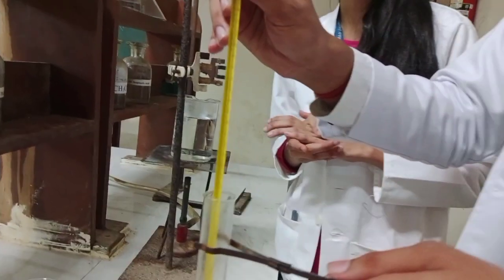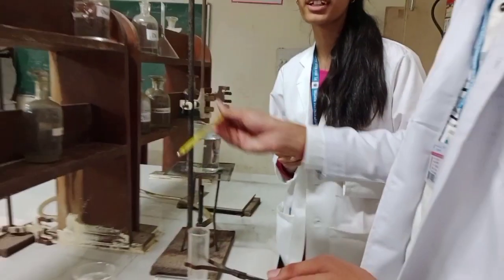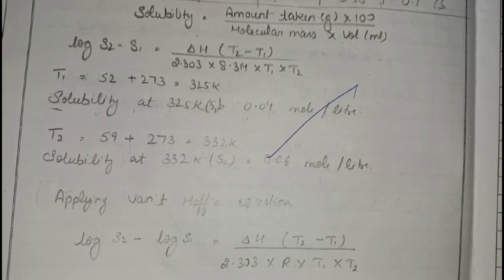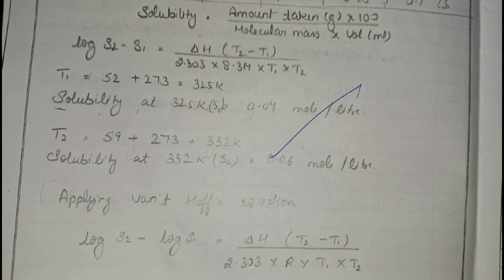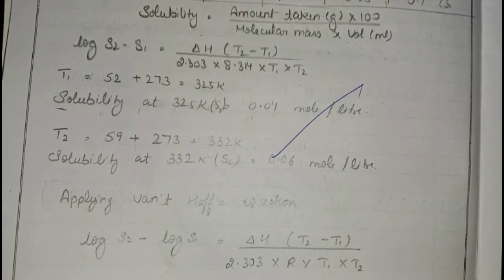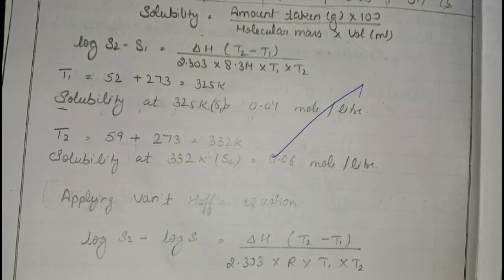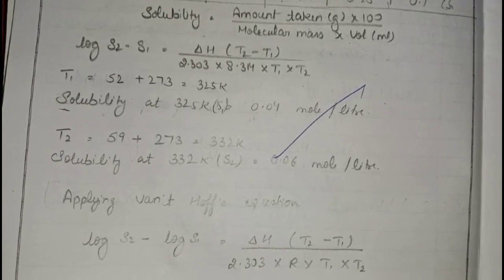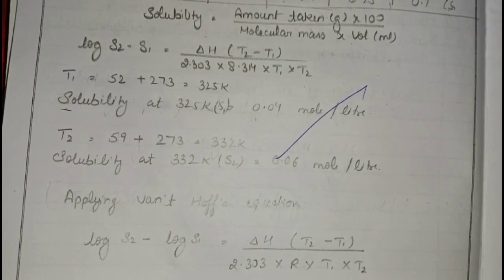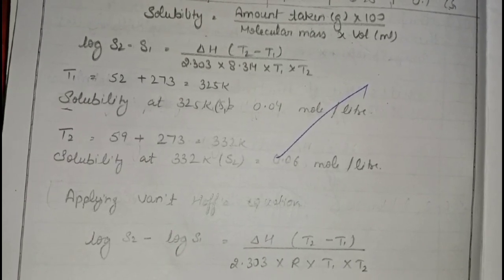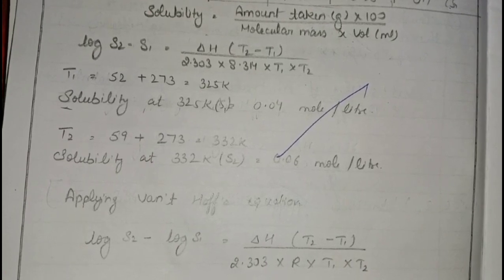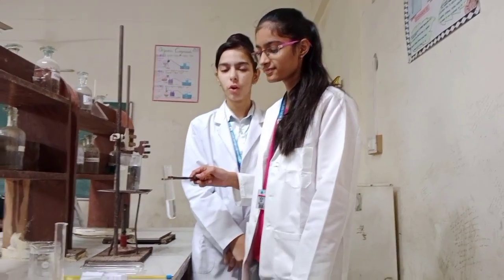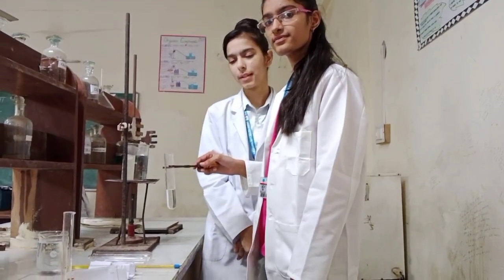Now we will calculate the solubility of benzoic acid. Using the formula of solubility for 0.1 g of benzoic acid, the solubility comes out to be 0.04 mol per litre at 325 Kelvin and 0.06 mol per litre at 332 Kelvin. Similarly, we will calculate the solubility for the other 3 samples of benzoic acid.